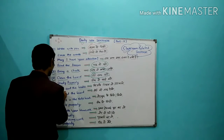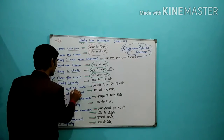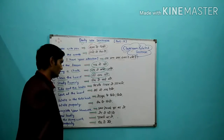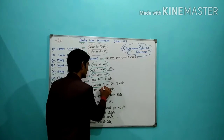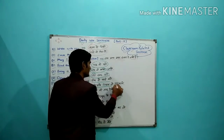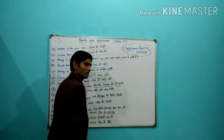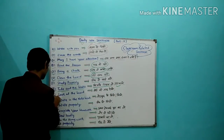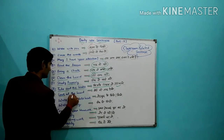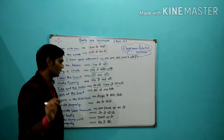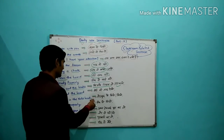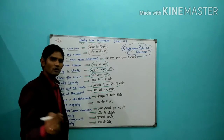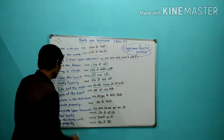Next sentence है: Take out the books. इसका मतलब है, किताबें निकालो। Are you getting friends? Next sentence: Look at the board. इसका मतलब है, board की तरफ देखो।